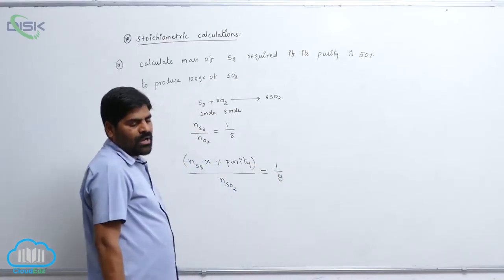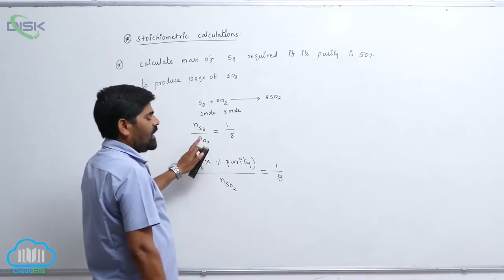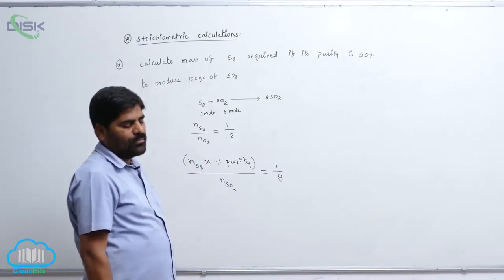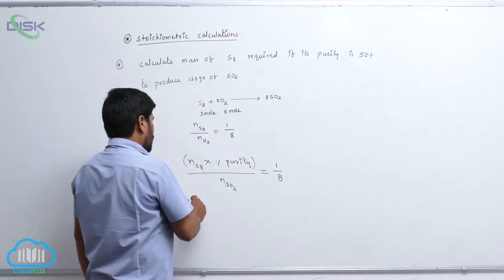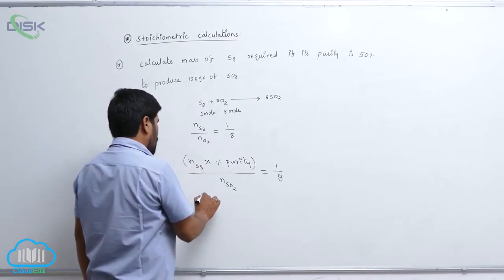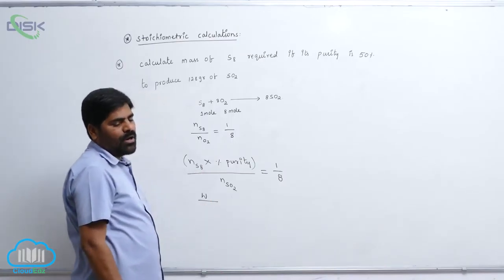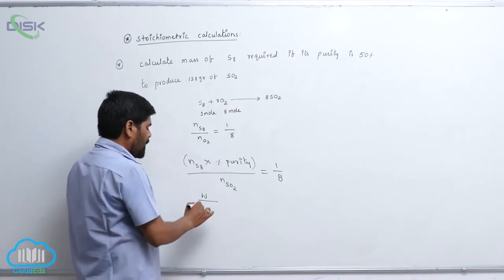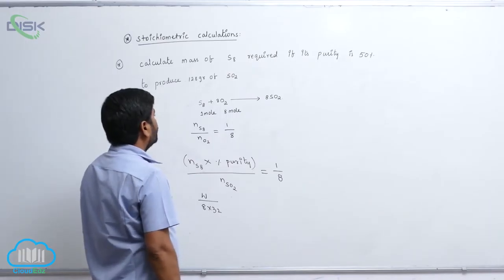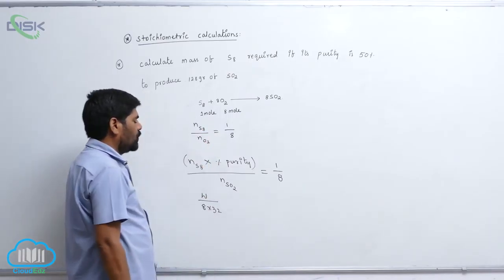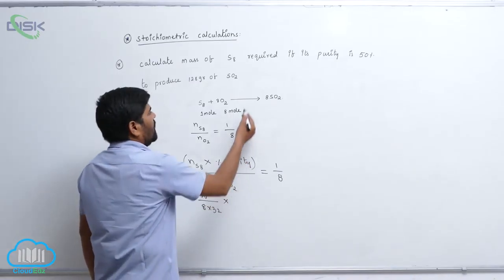Then you know the number of moles, N S8 equals to weight we don't know. So this weight we have to find out. Weight by how many molecules? 8 molecules. So 8 into 32 into percentage of purity is how much?